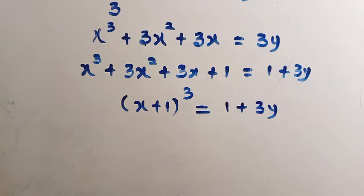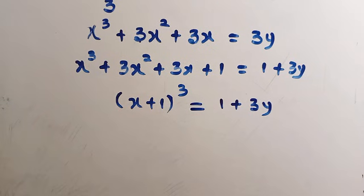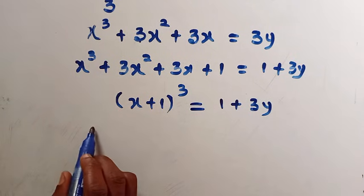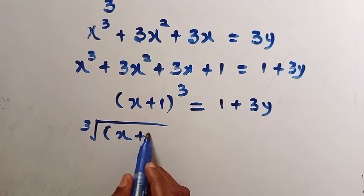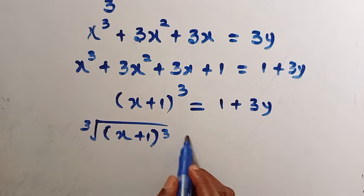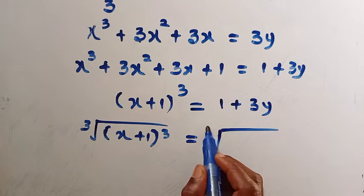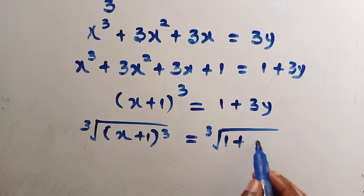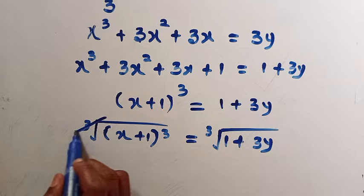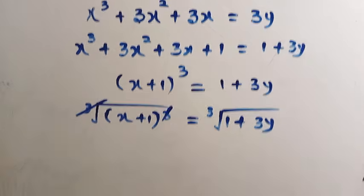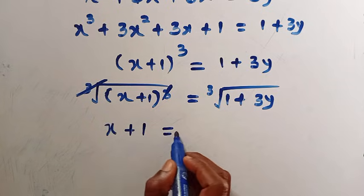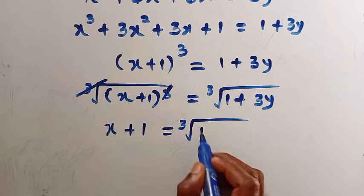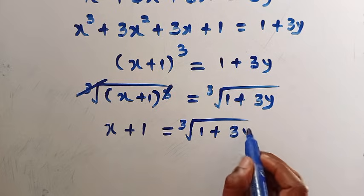So next step, I want to make x the subject of the formula. We have to take the cube root of both sides. By taking the cube root of x plus 1 raised to power of 3, this will equal the cube root of 1 plus 3y. So this cancels this, and we have x plus 1 equals the cube root of 1 plus 3y.